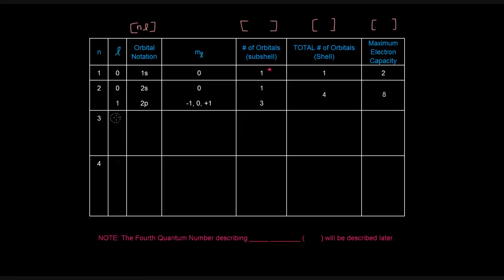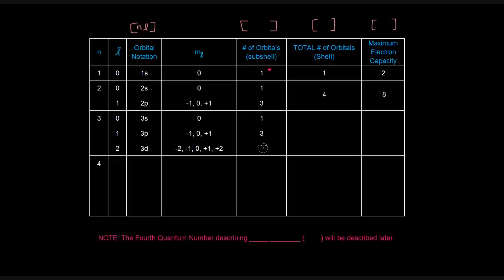For n equals 3, the possible l values are 0, 1, and 2. L equals 0 gives the 3s orbital, l equals 1 gives the 3p orbitals, and l equals 2 gives the 3d orbitals. The 3s subshell has 1 orbital, 3p has 3, and 3d has 5 — with m sub l values of negative 2, negative 1, 0, positive 1, and positive 2. The total orbitals in this shell is 9, giving a maximum electron capacity of 18.